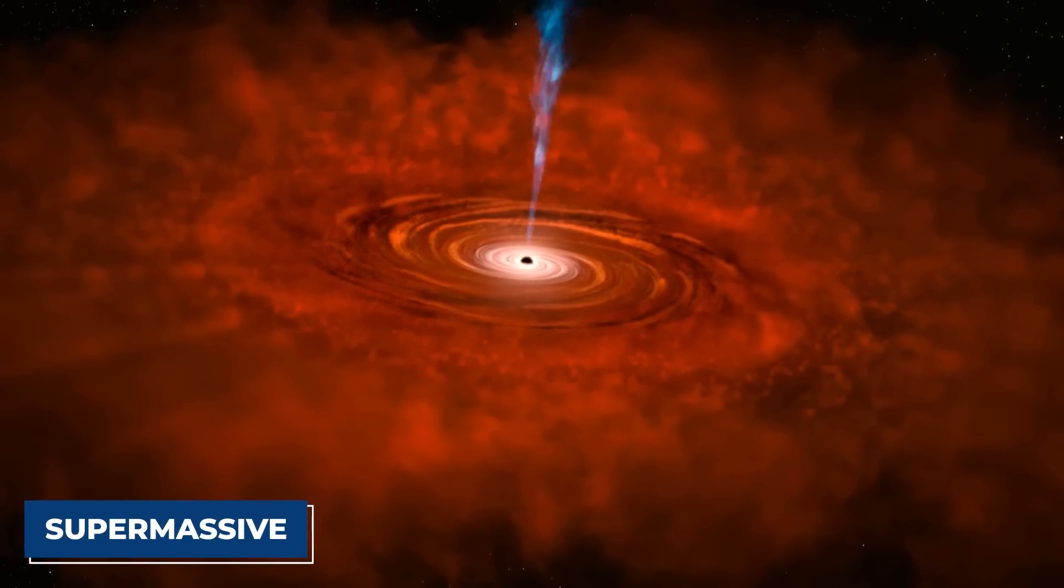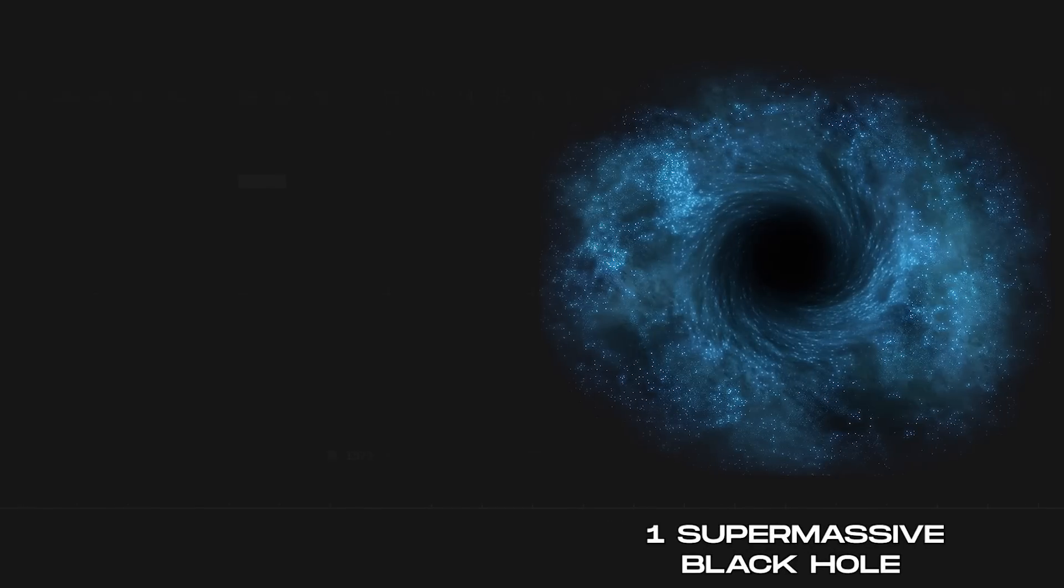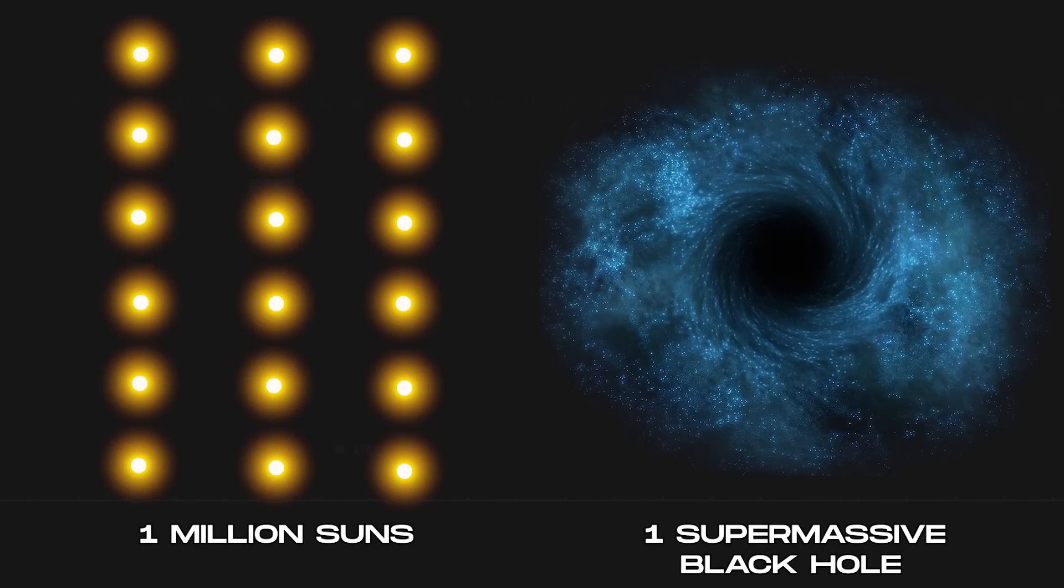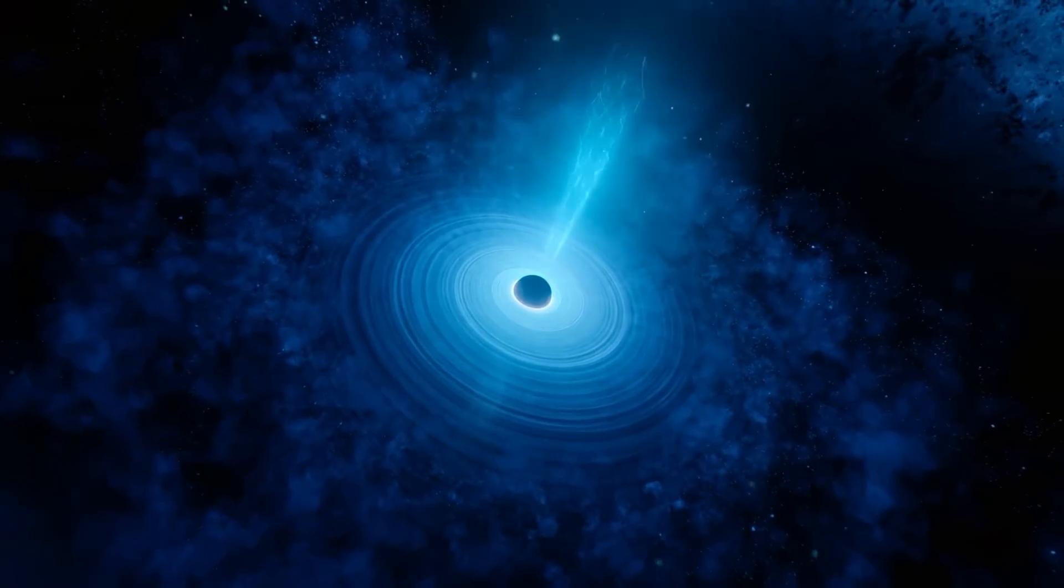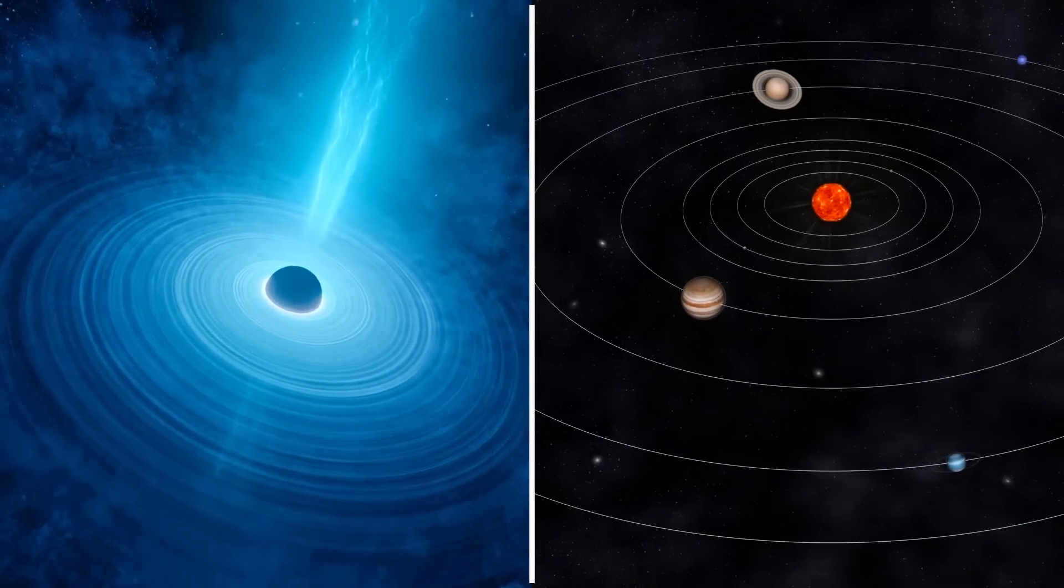The largest black holes are called supermassive. These weigh more than 1 million suns combined. However, they would fit inside a ball with a diameter about the size of the solar system.